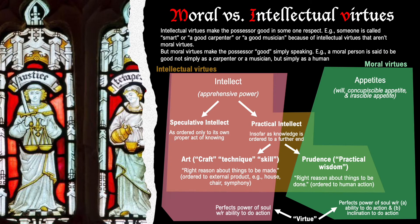Prudence is an intellectual virtue, but it's also a moral virtue, because it entails not only a perfection of the soul with respect to the ability to do certain actions, but also with respect to its own desiring or inclination towards that sort of action. Intellectual virtues make the possessor good in some one respect — someone is called a good carpenter or a good musician. But moral virtues make the possessor good, simply speaking, without any qualification. A moral person is said simply to be a good human.